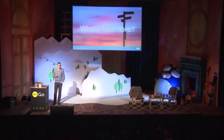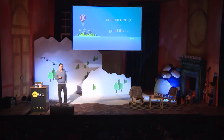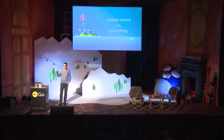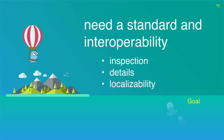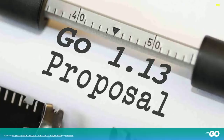So where do we go from here? One thing that has served the Go community very well, we think, is the errors-as-values mantra. We really think that people should be able to write their own custom error types, and whatever solution we provide should not shove one way of dealing with errors down everybody's throat — it should be an open standard. But we do need a standard to improve interoperability when it comes to inspection, printing details, or even localization. This is really what the Go 1.13 error values proposal is about.